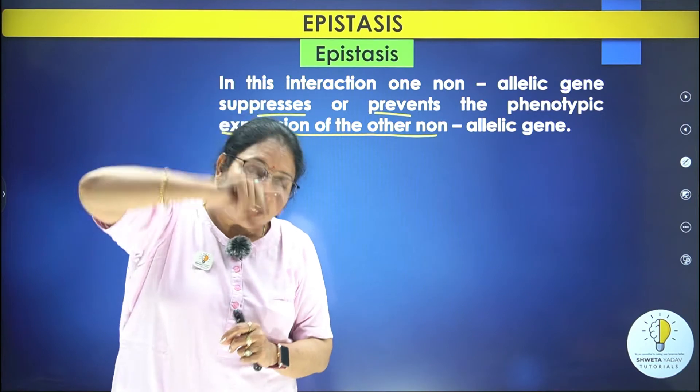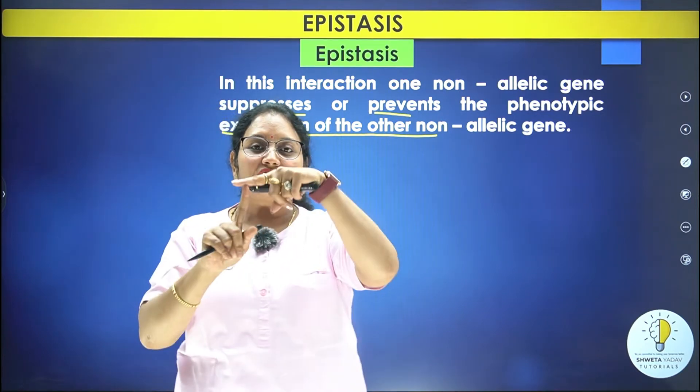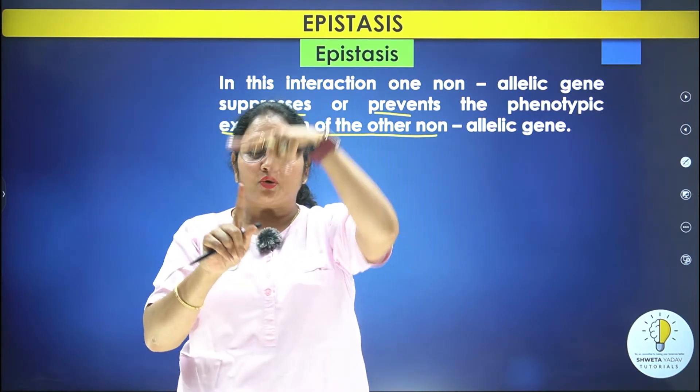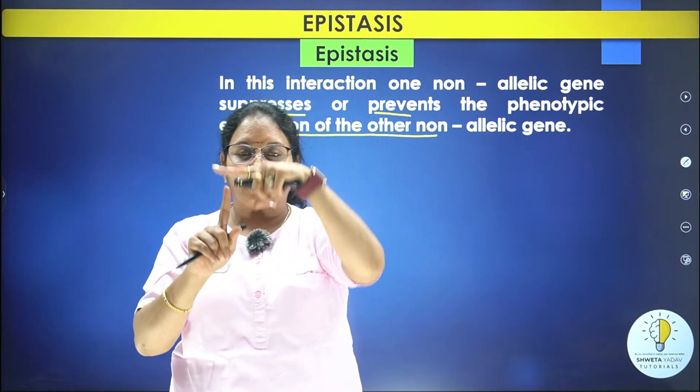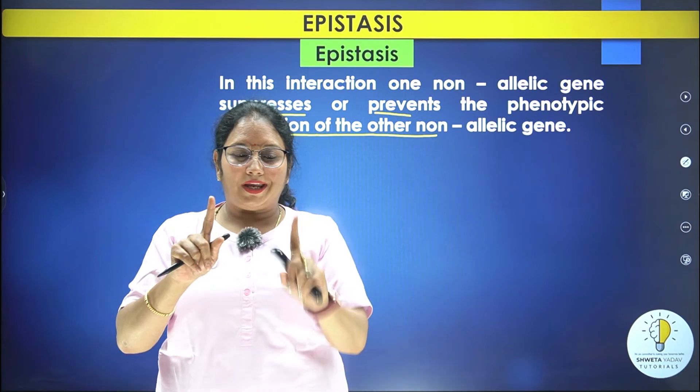When one gene suppresses the expression of another gene, there are two types of genes involved.